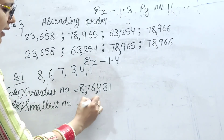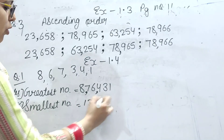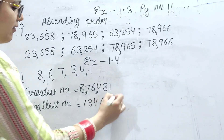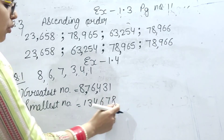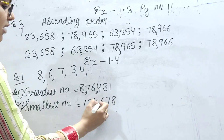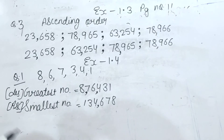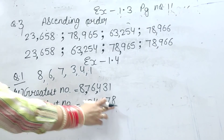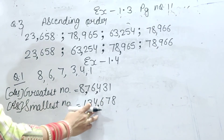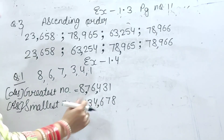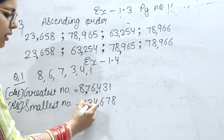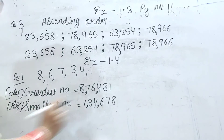For smallest: 1, 3, 4, 6, 7, 8. Comma lagayenge: ones, tens, hundreds — comma — thousands, ten thousands — comma — lakh. Is tariqe se hum comma ko lagate hain.